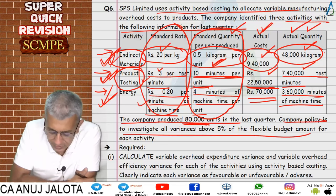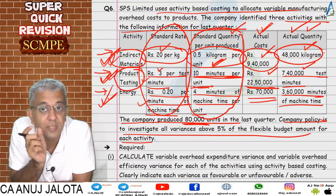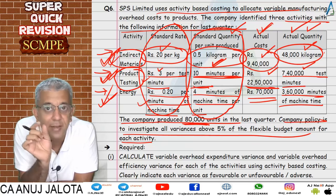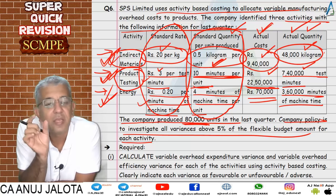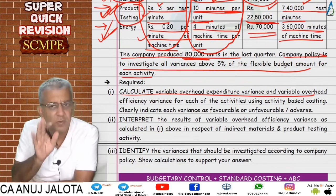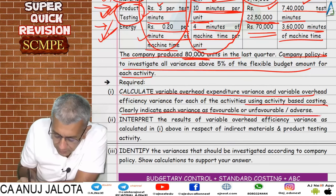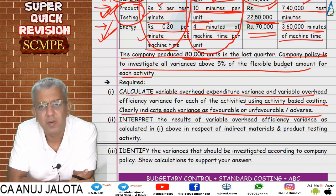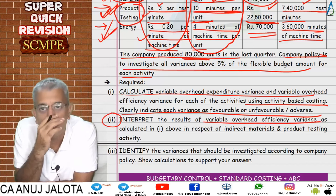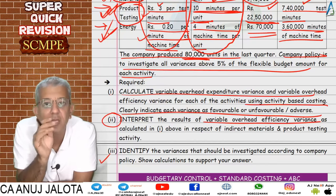One more requirement: the company investigates all variances above 5% of the flexible budget amount for each activity. Flexible budget is the revised standard amount. Take the variance, divide by the revised standard figure, multiply by 100 — if above 5% investigation is required. The question asks to calculate variable overhead expenditure and efficiency variance for each activity using ABC, indicate favorable or adverse, and identify variances requiring investigation.